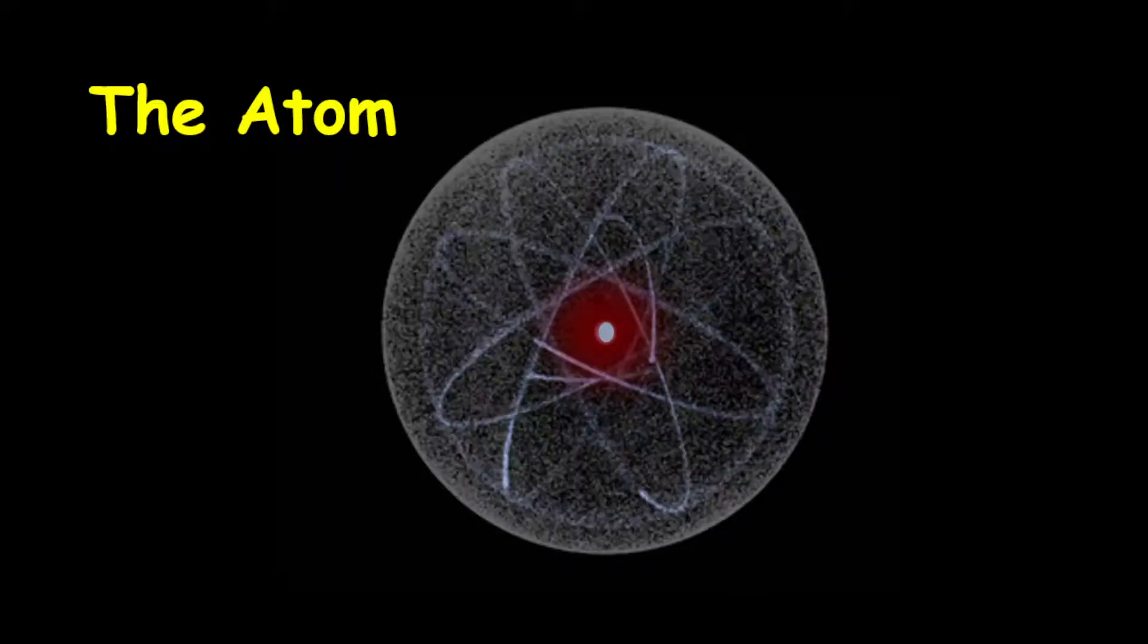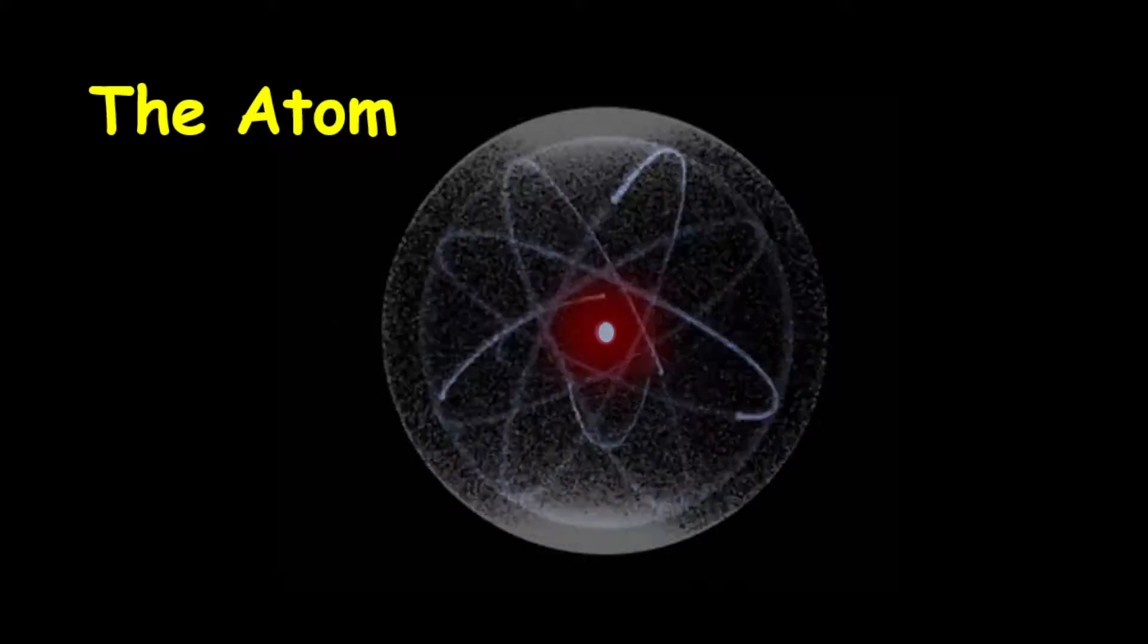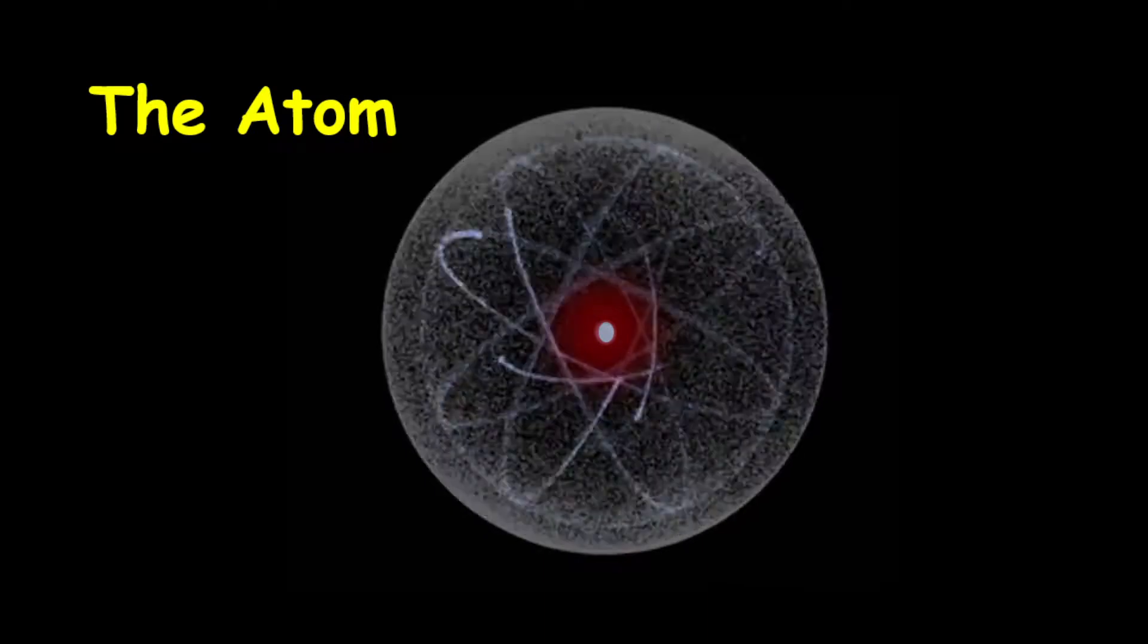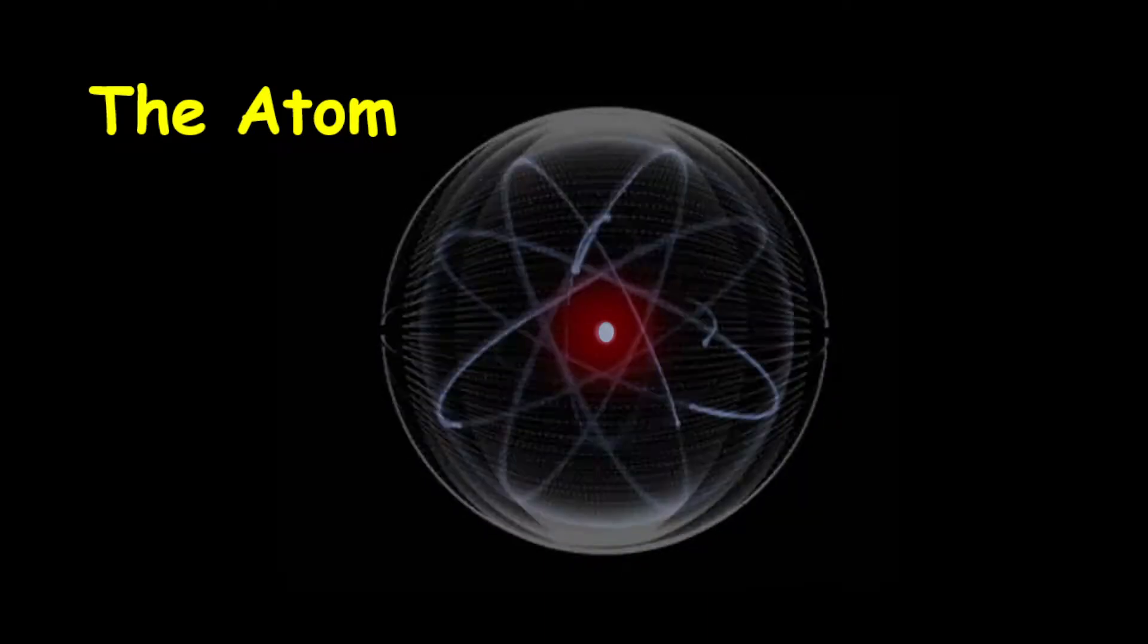Hello everyone, today we're going to talk about the atom, particularly we want to shed light onto a debate question that was asked. How is it possible that electrons are of the same charge, but they can be in pairs on the same shell?